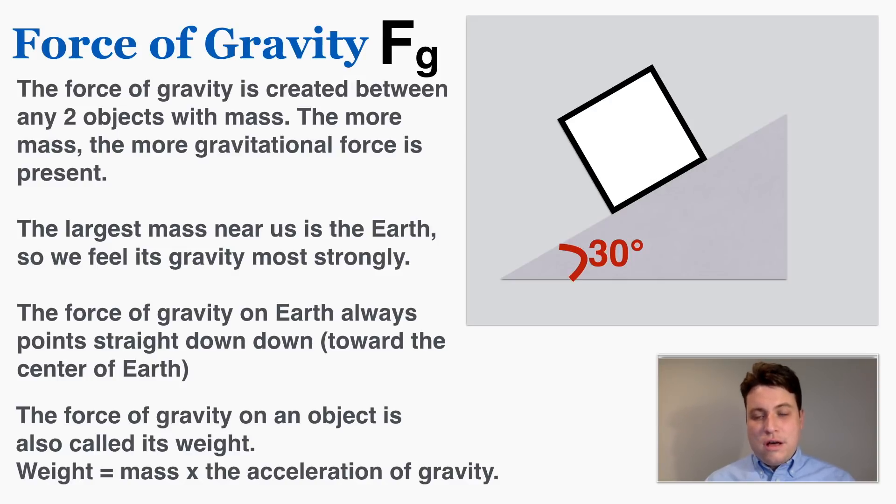This is a common misconception: if an object is on a ramp a lot of students will mistakenly draw the gravity like this pointing straight into the ramp, but that is not correct. The force of gravity always points straight down like that. That is going to become extremely relevant in a few days. For now you just have to remember, even on a ramp like this, the force of gravity points straight down.